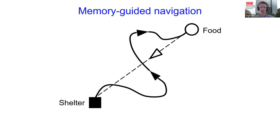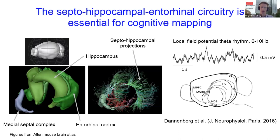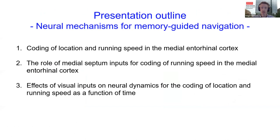These cues are integrated to form a cognitive map of the environment for the purpose of memory-guided spatial navigation. Decades of research have shown that the hippocampal formation is central to the formation of a cognitive map. The activity of neurons there is temporally organized by theta rhythmic oscillations — theta refers to a frequency range between 6 and 10 Hz, often called the 'online state' of the brain — and this theta rhythmic activity depends on the medial septum and diagonal band of Broca, a brain region in the basal forebrain.